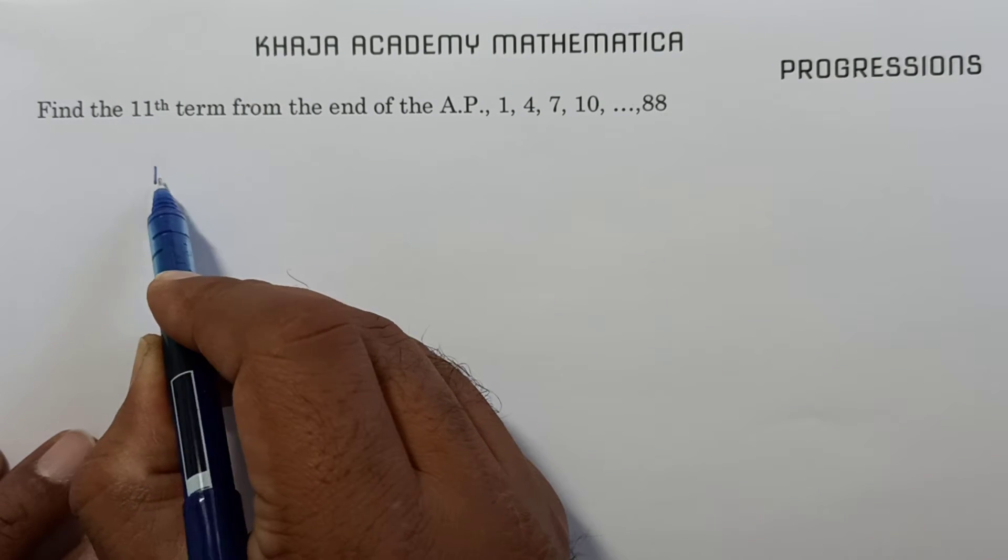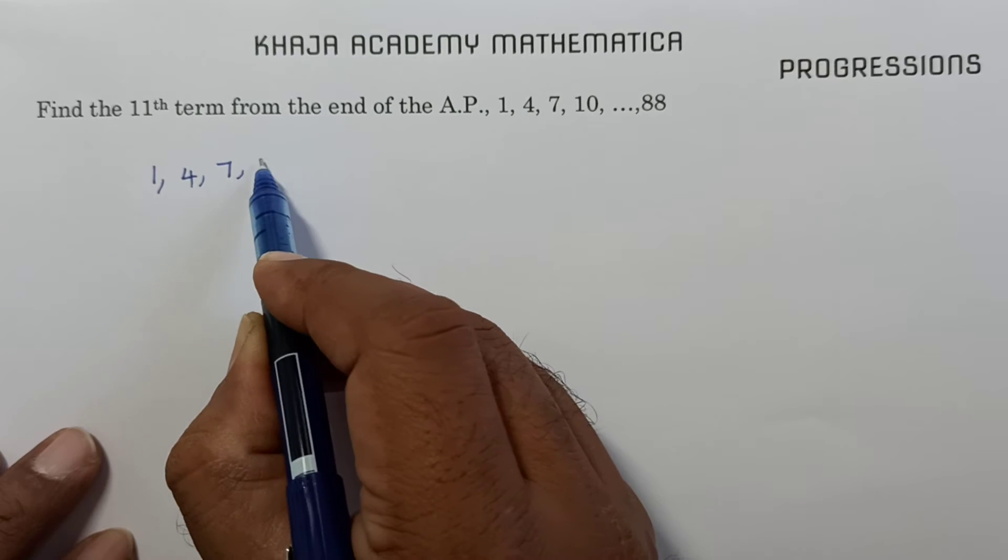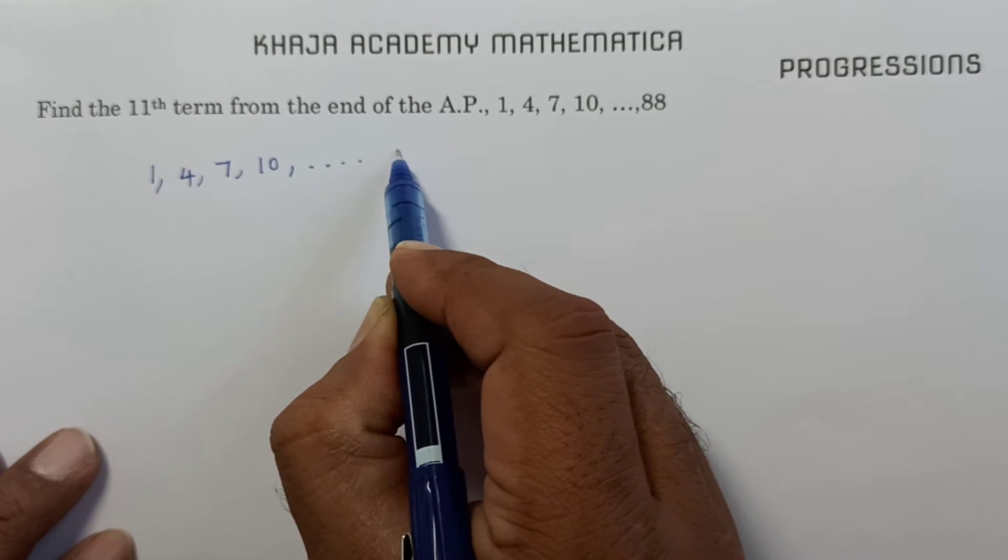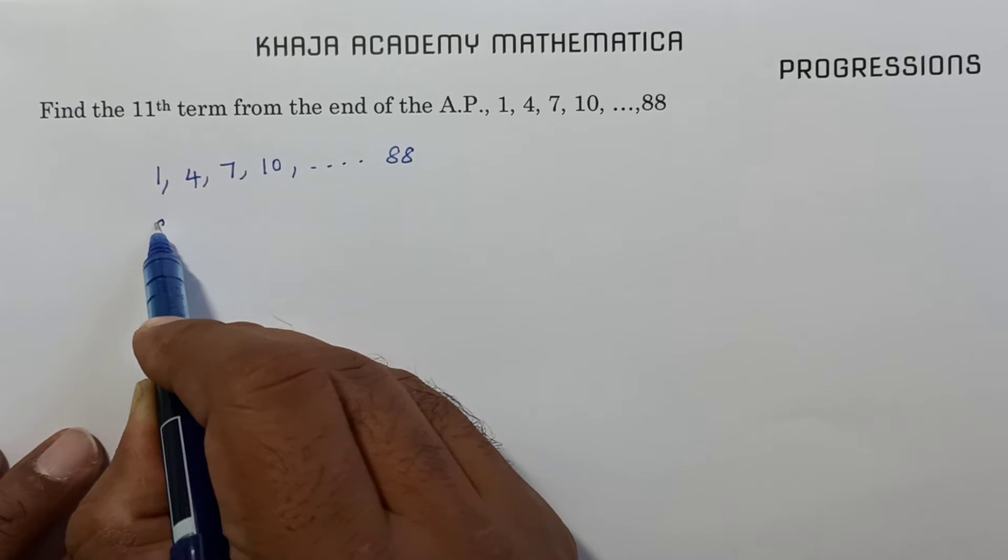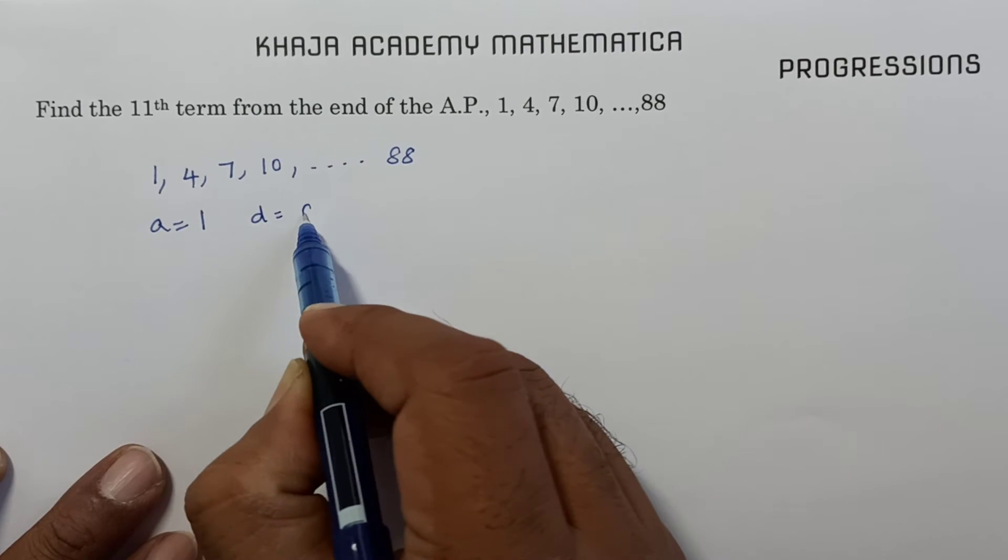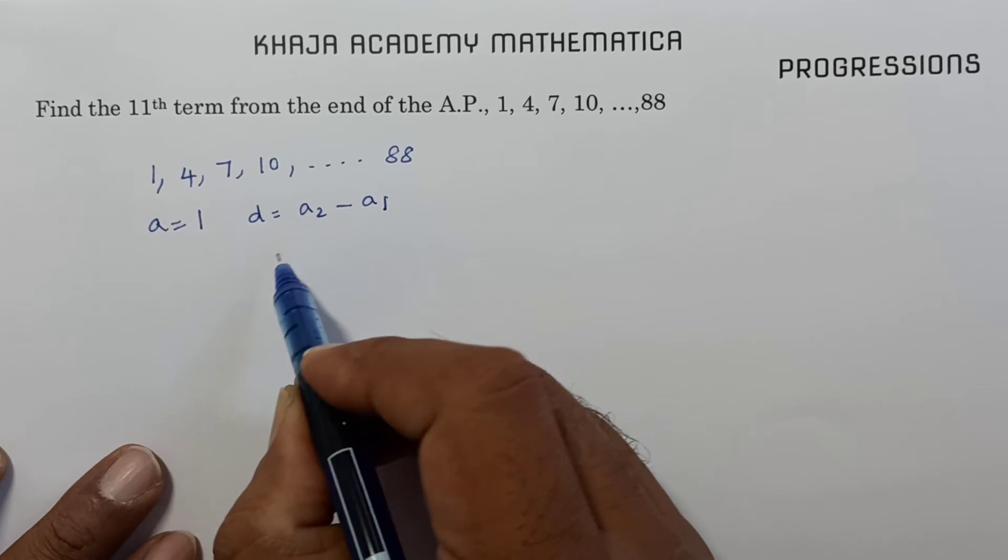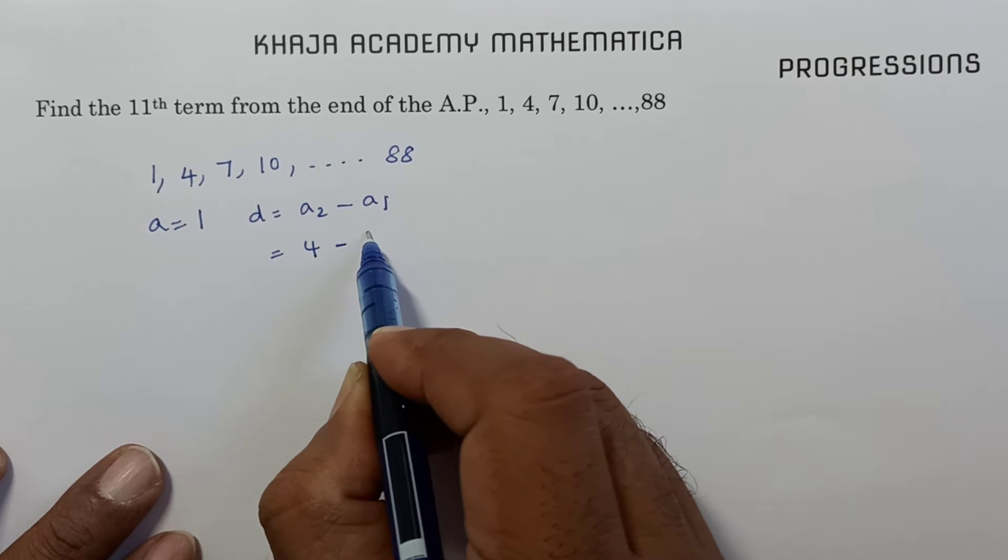So here the series is 1, 4, 7, 10, ..., 88. The first term is 1. Common difference is A2 minus A1, so that is 4 minus 1. Common difference is 3.